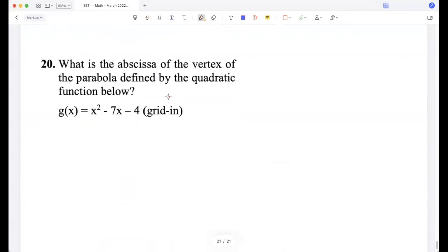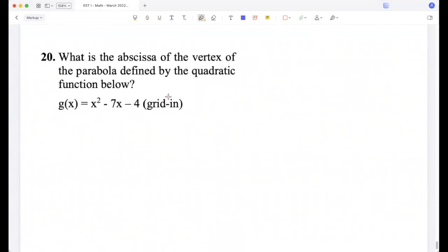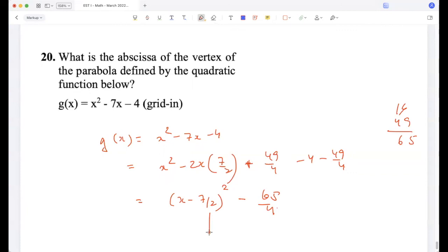What is the abscissa of the vertex of the parabola defined by the quadratic function g(x) = x² - 7x - 4? So x² - 2x(7/2) + 49/4 - 4 - 49/4. So I've completed the squares. So (x - 7/2)² - (16 + 49)/4 = -65/4.